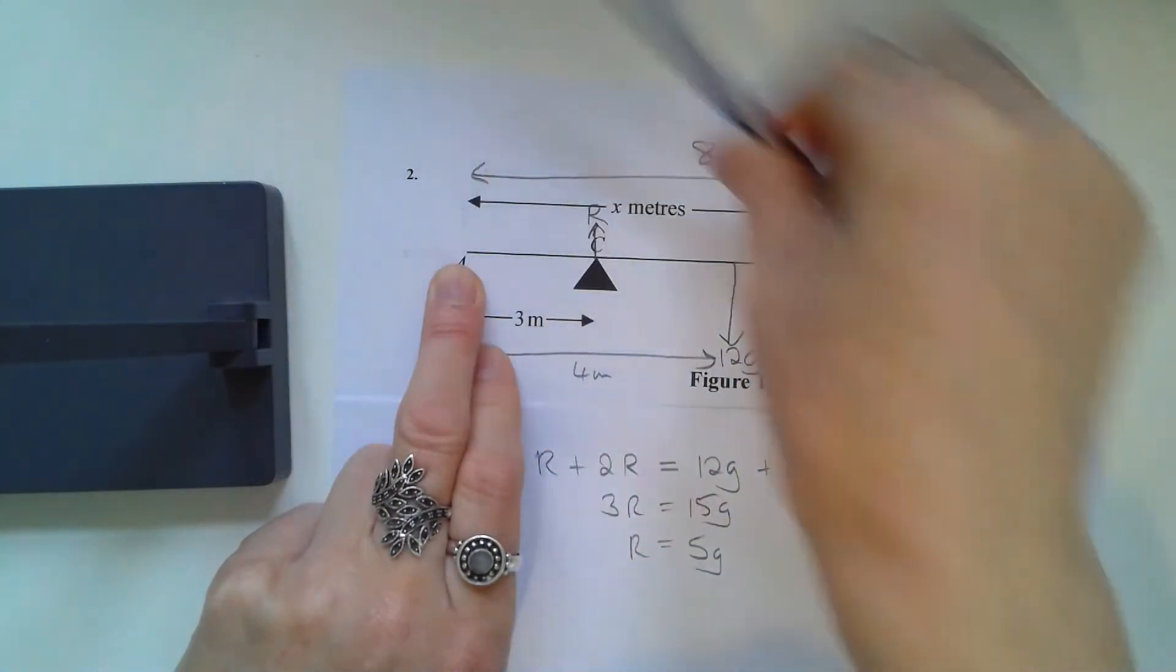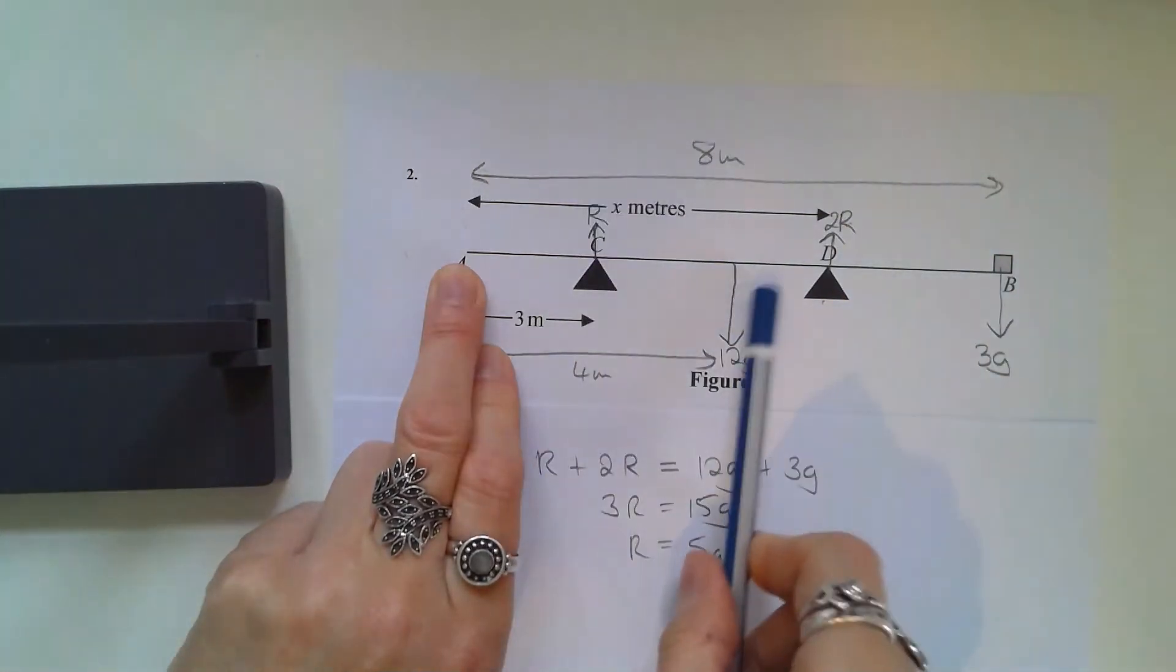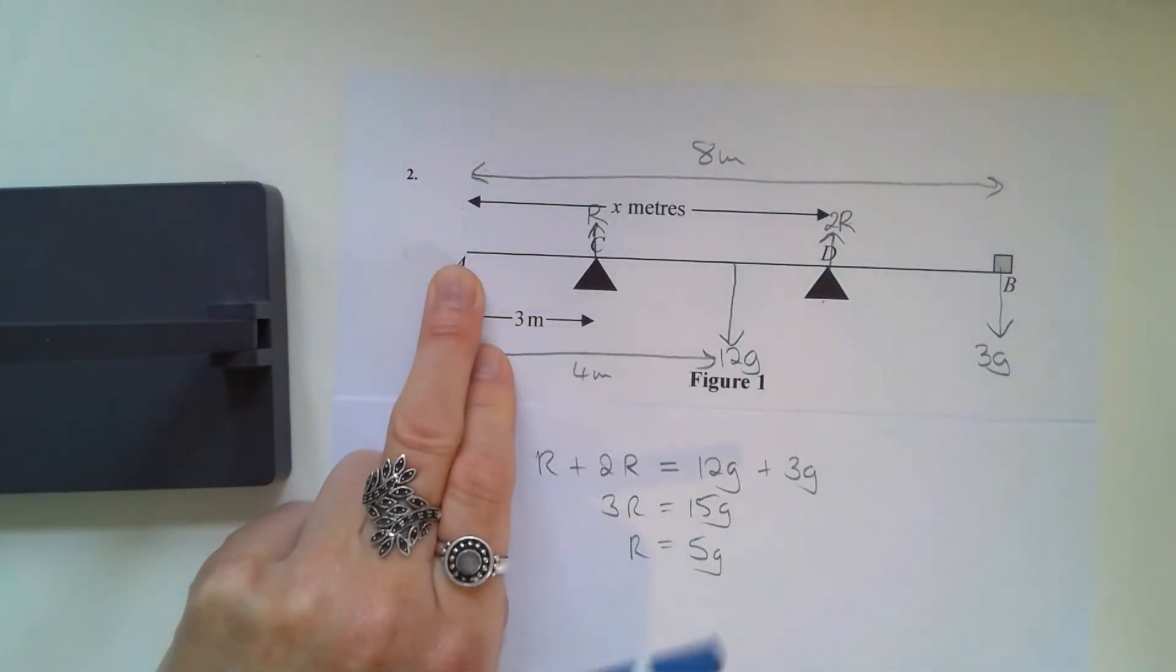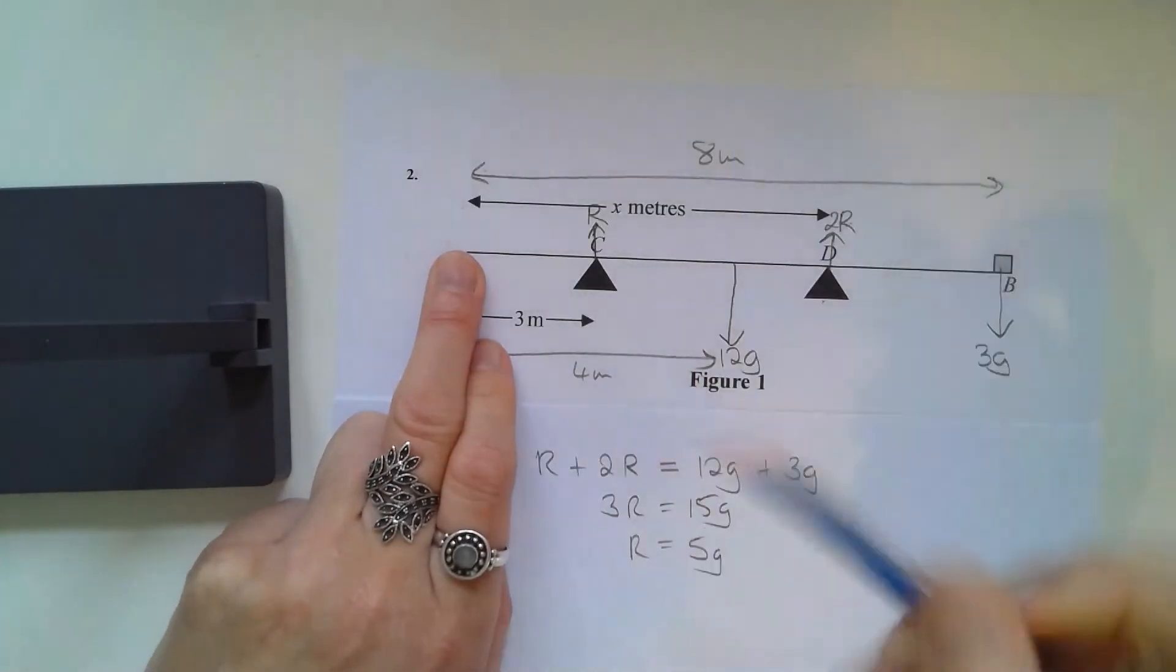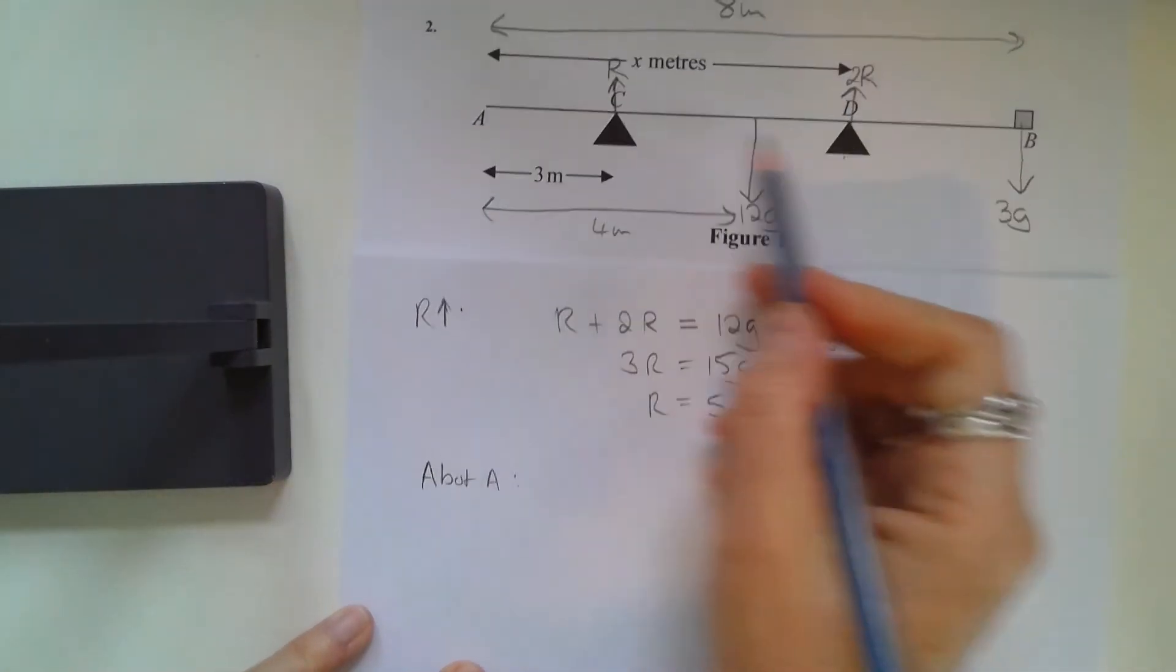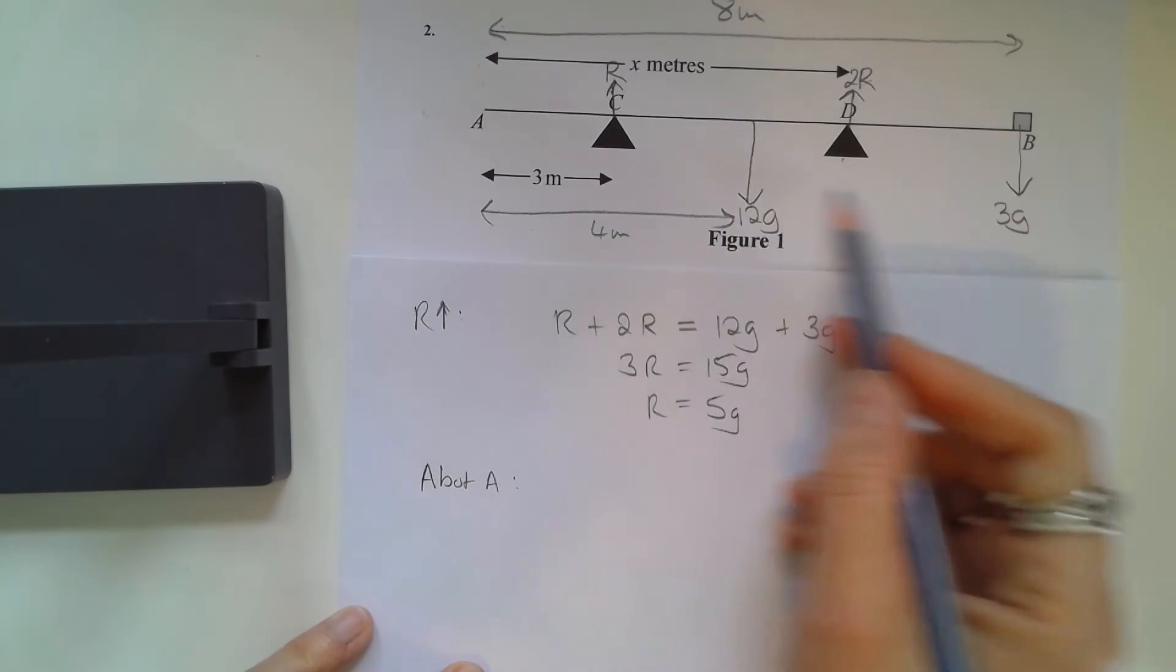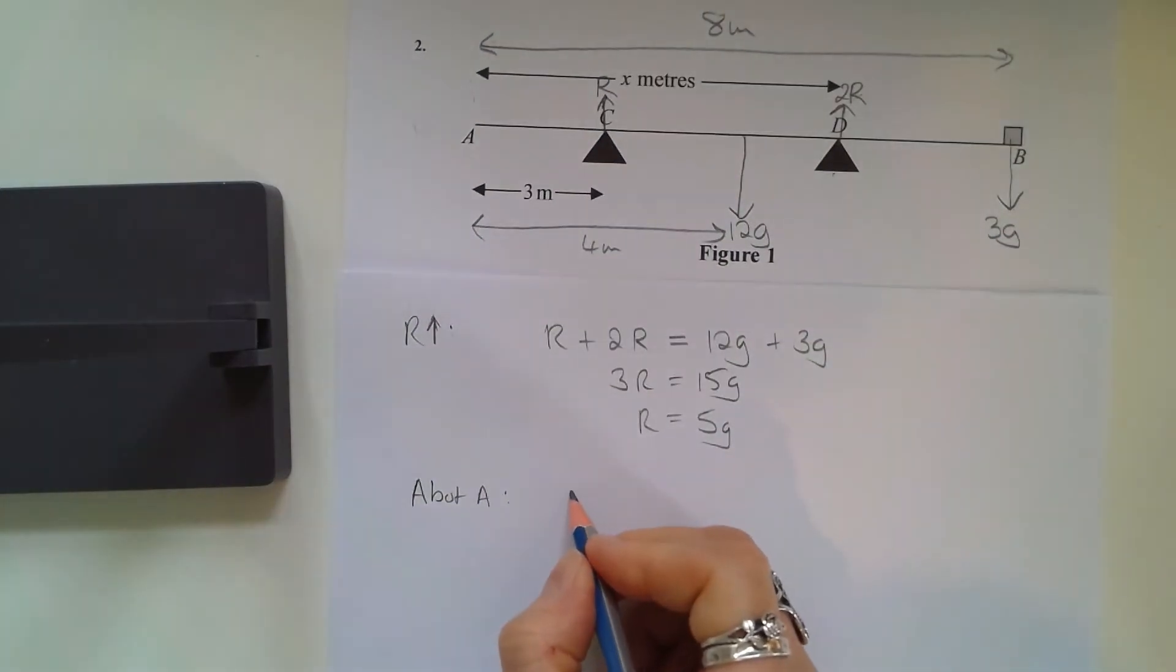So I'm turning my pencil around as if it's going around that point. And this force of 12g is going anti-clockwise, and 3g going anti-clockwise as well, as if your pencil was on a string attached to A. So these anti-clockwise moments will balance out with the clockwise moments because the plank is in equilibrium.